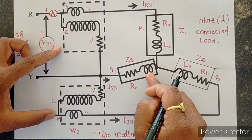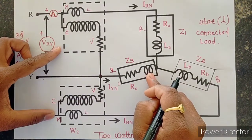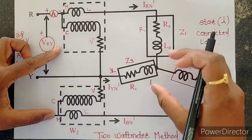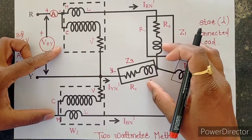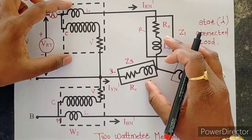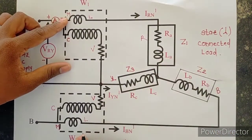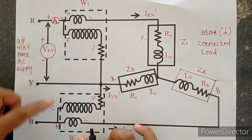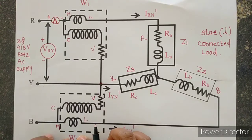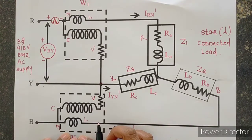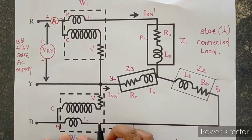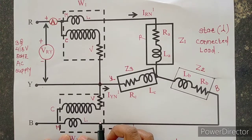For a resistive type of load, wattmeters W1 and W2 should show the same readings. We will verify in the practical whether the readings are equal or not.